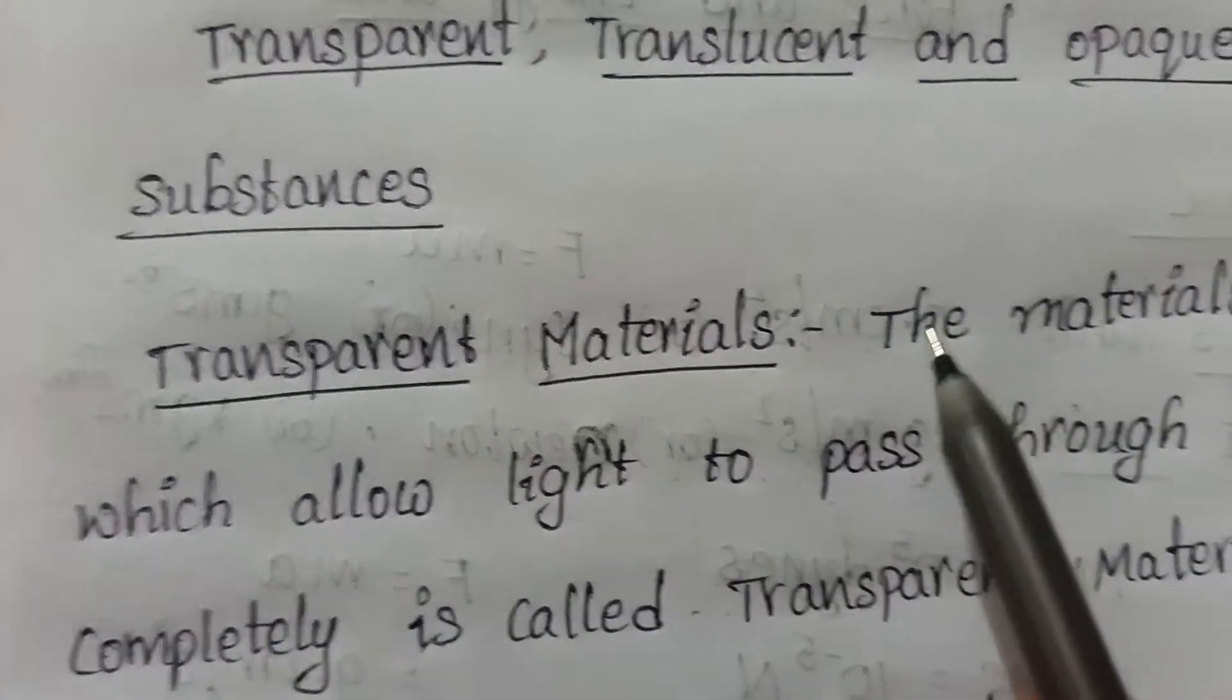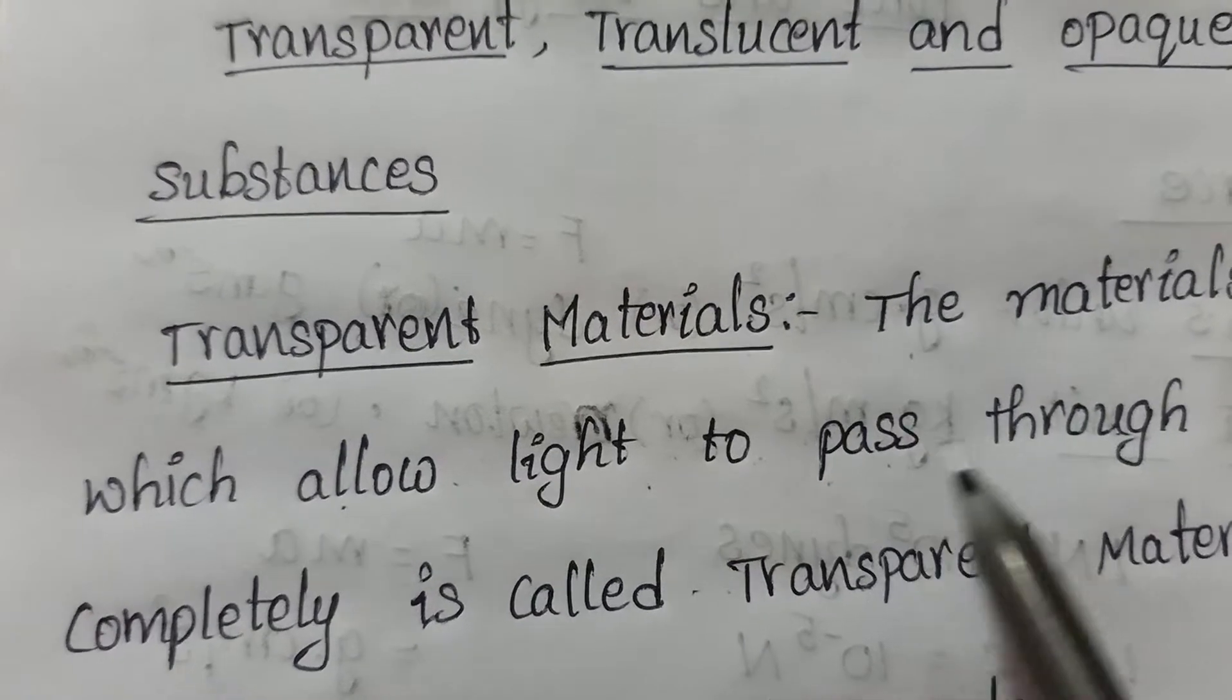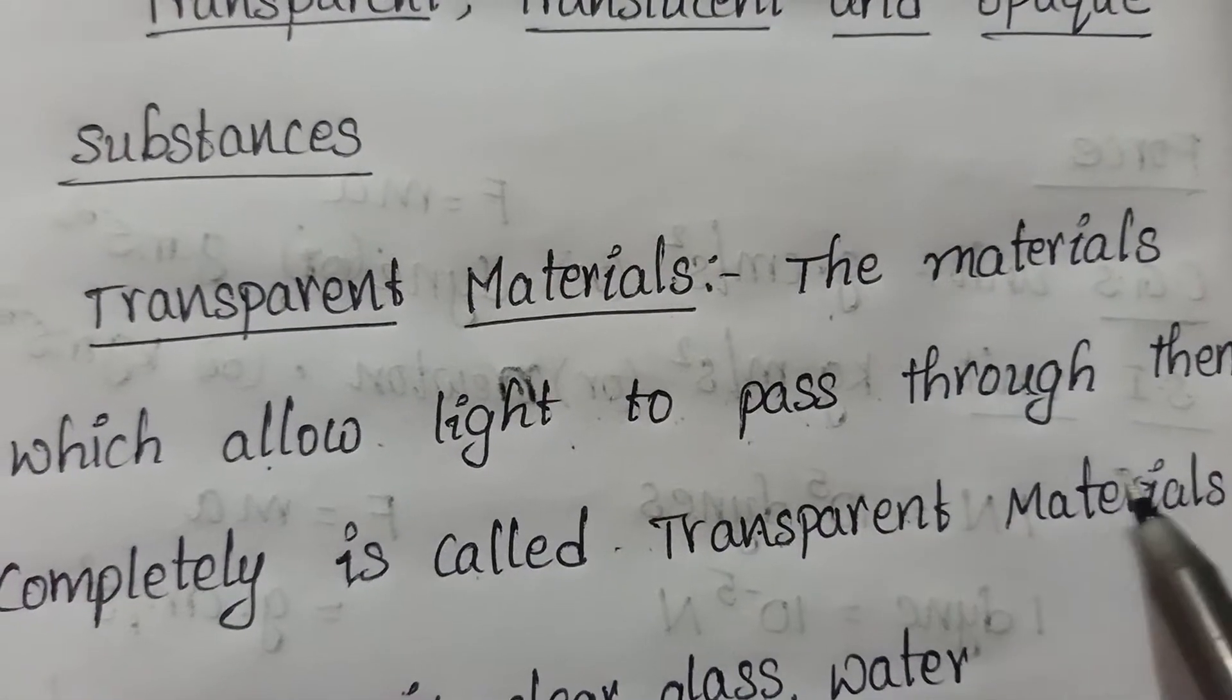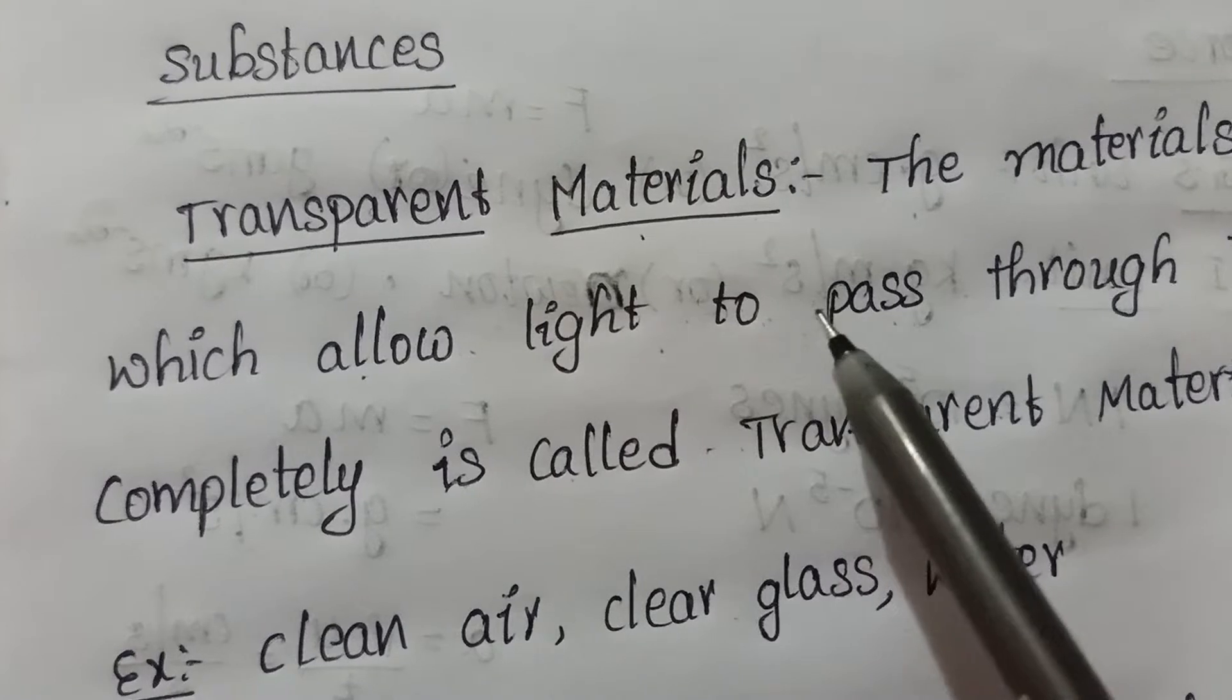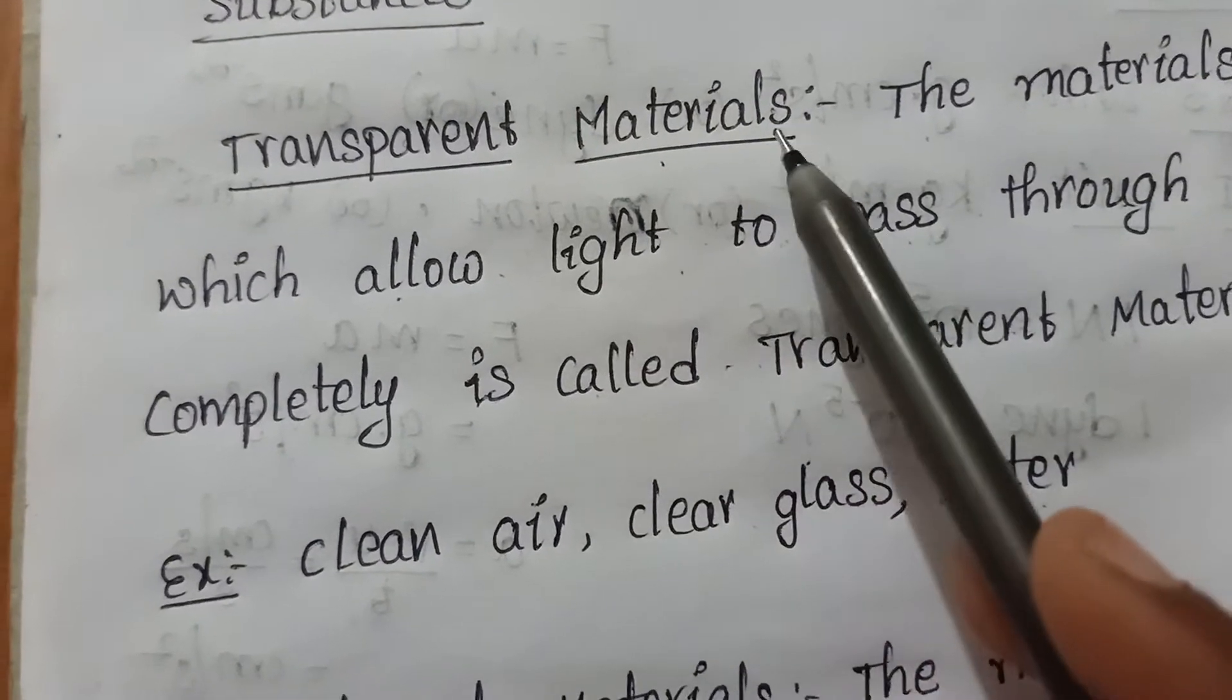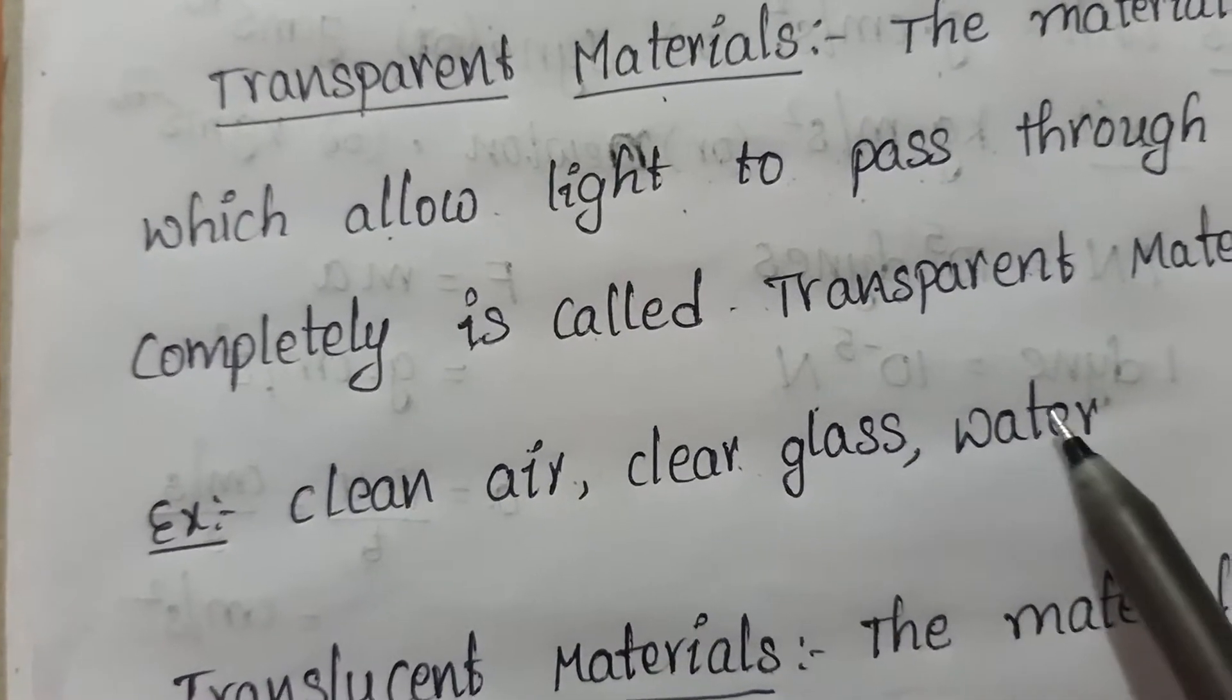Transparent materials: the materials which allow light to pass through them completely is called transparent materials. These transparent materials allow the light to pass through them completely. Examples: clean air, clear glass, water.